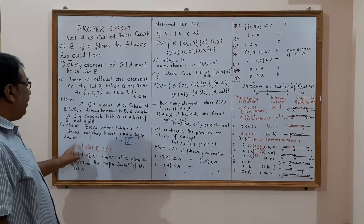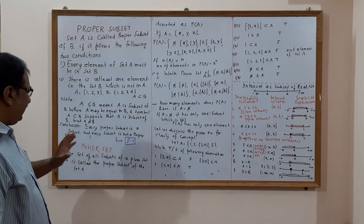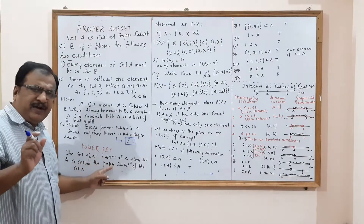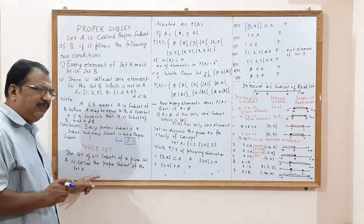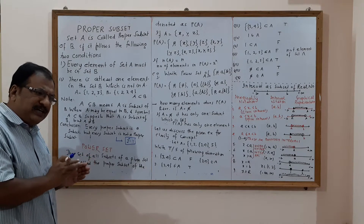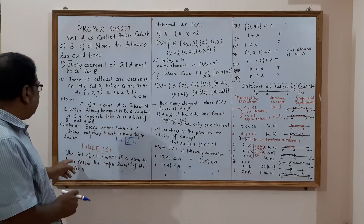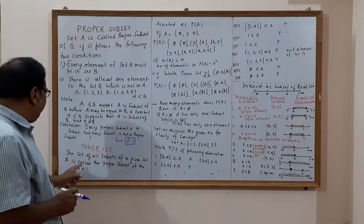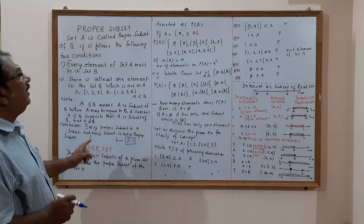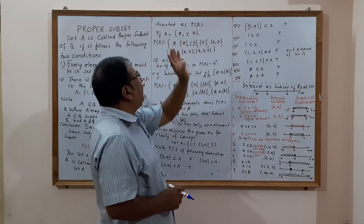Now, power set. What is the meaning of power set? The power set is the set of all subsets of a given set. That means all the elements in the power set will be in the form of sets. The set of all subsets of a given set A is called the power set of A.